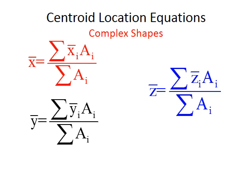But what about more complex shapes? For example, if we have a rectangle with a triangle or semicircle on top, we can find the centroid using these formulas. X-bar equals the summation of the product of each individual centroid times its area, divided by the summation of all the areas.